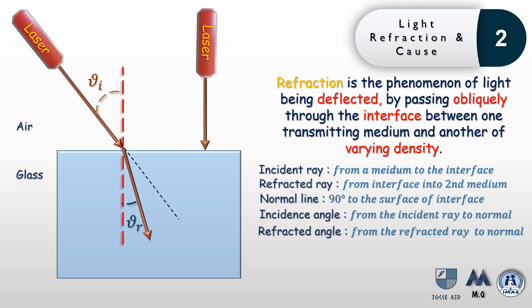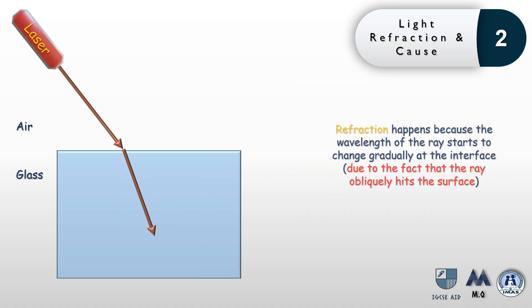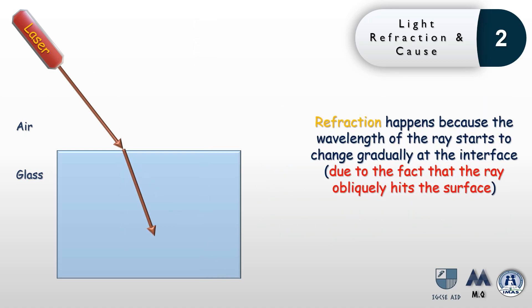If the angle of incidence is zero — meaning the laser hits the surface directly — the light will just continue without any refraction, however it will definitely move slower. To explain why refraction occurs, refraction happens because the wavelength of the ray starts to gradually change at the interface, and this is due to the fact that the ray obliquely hits the surface.